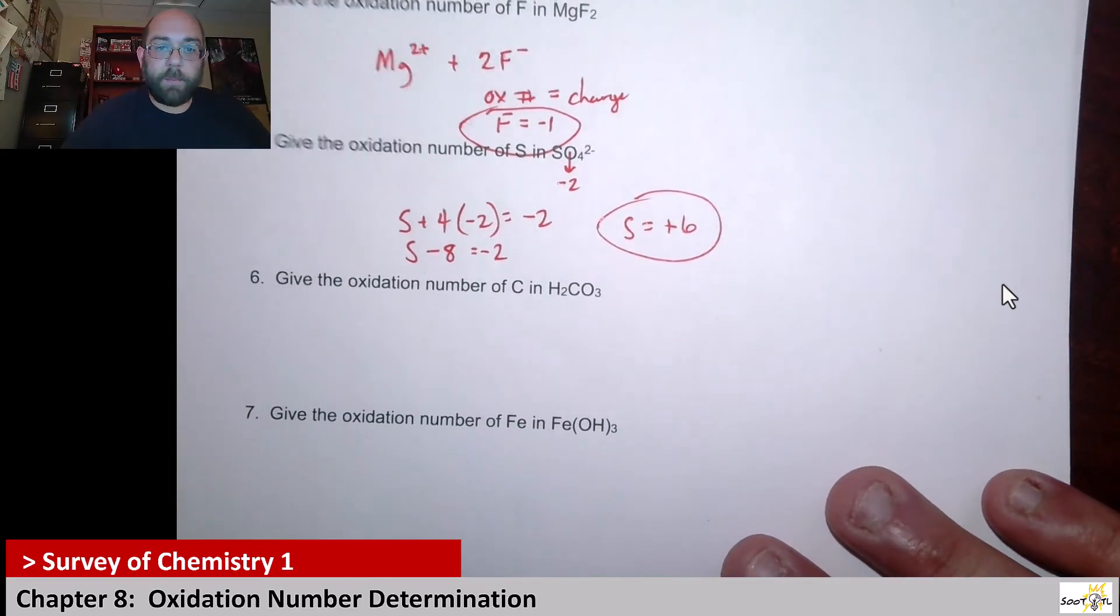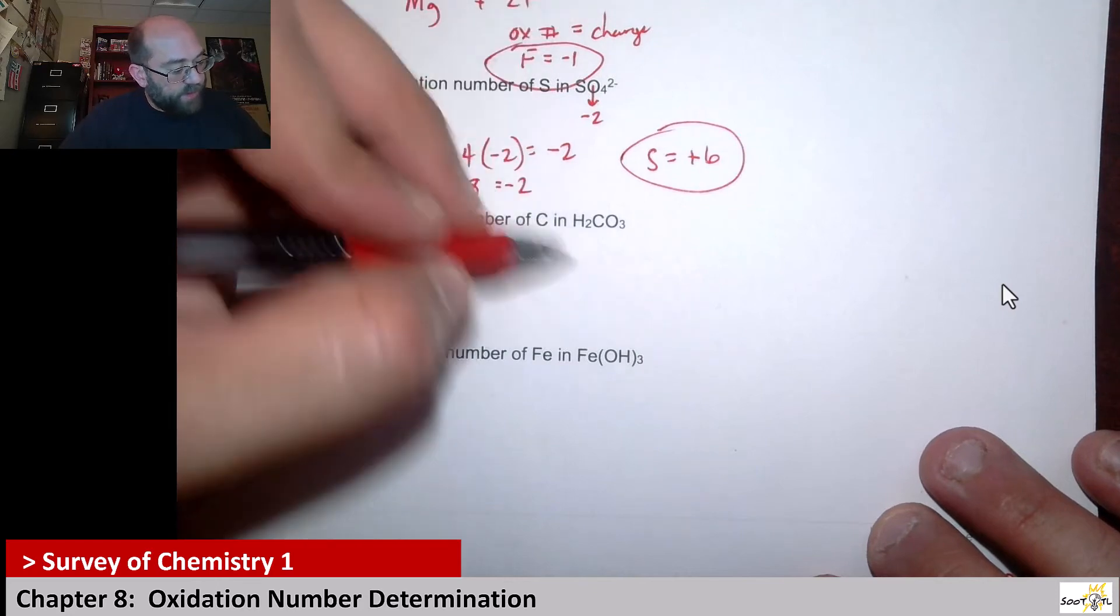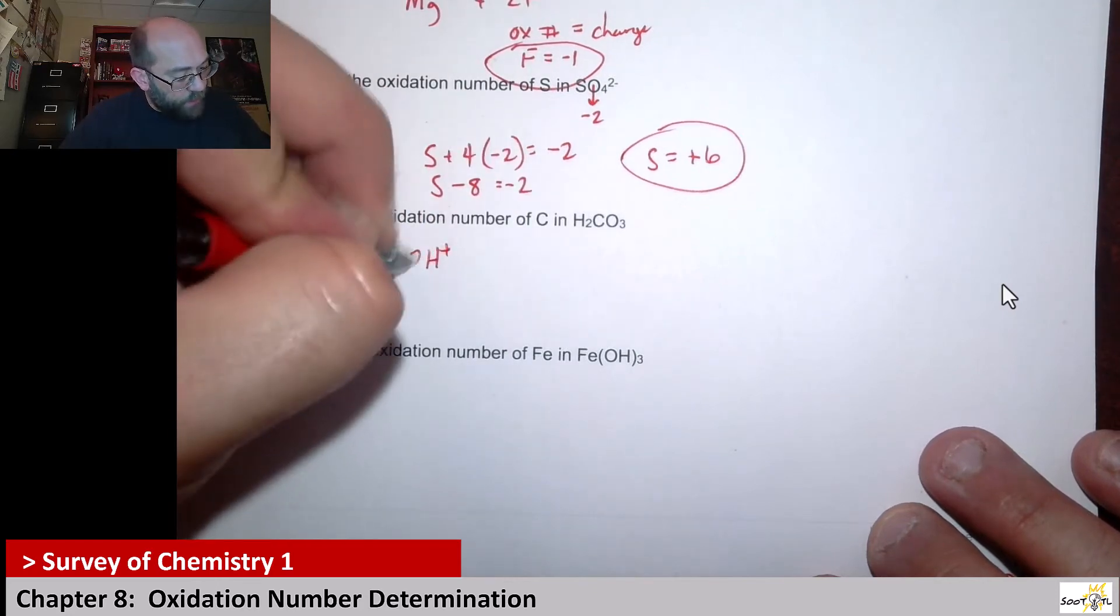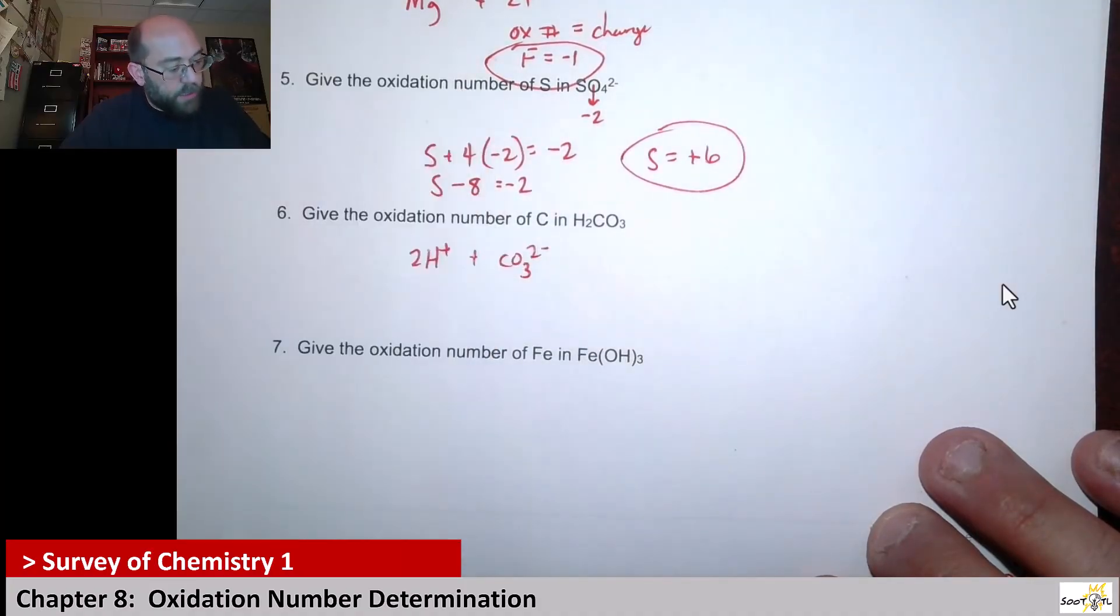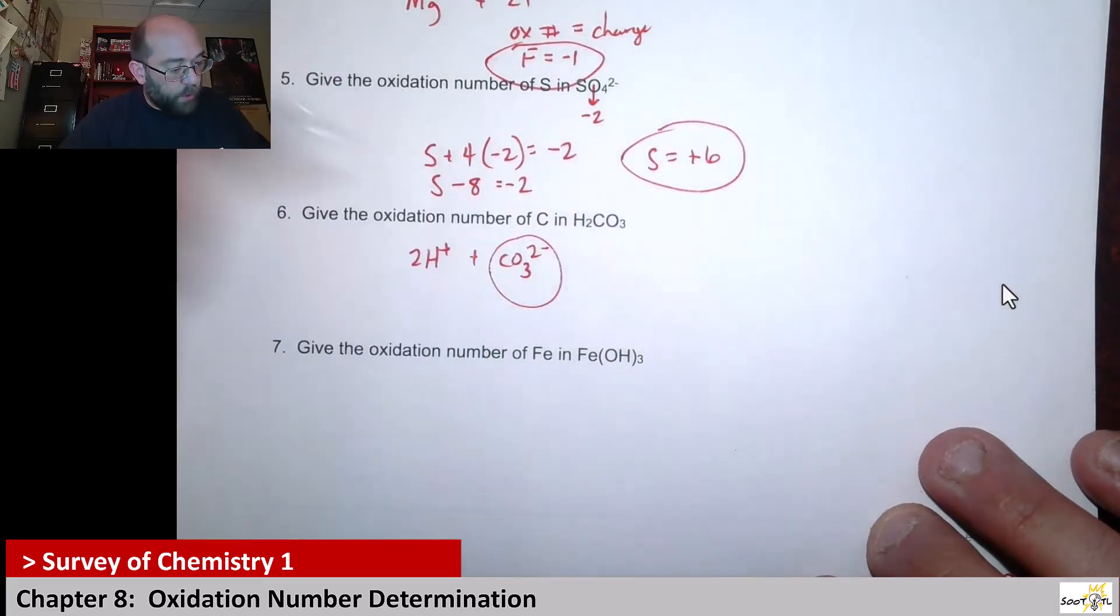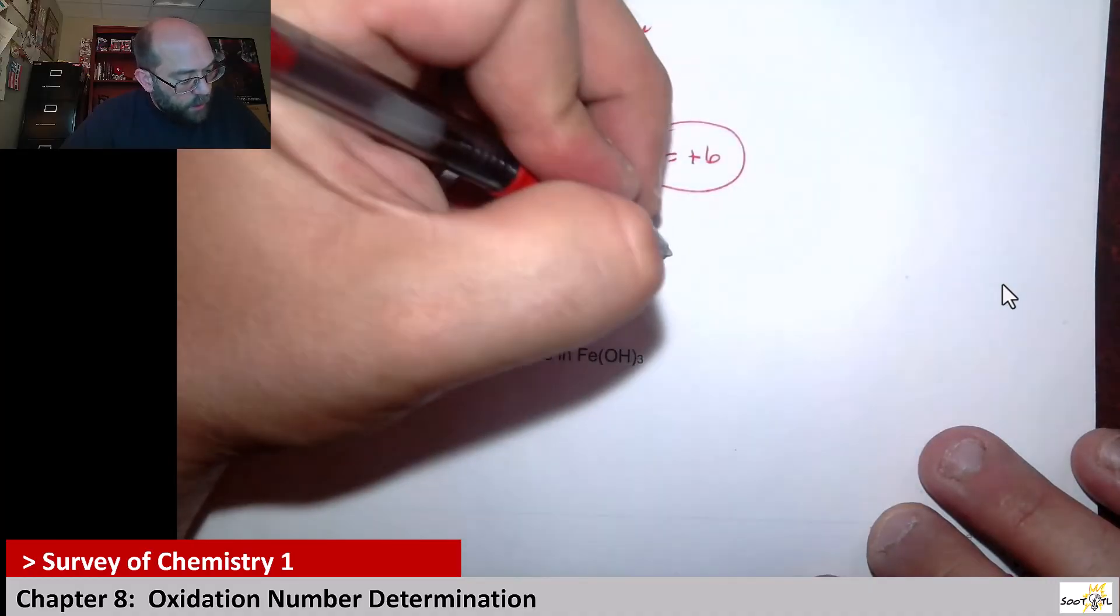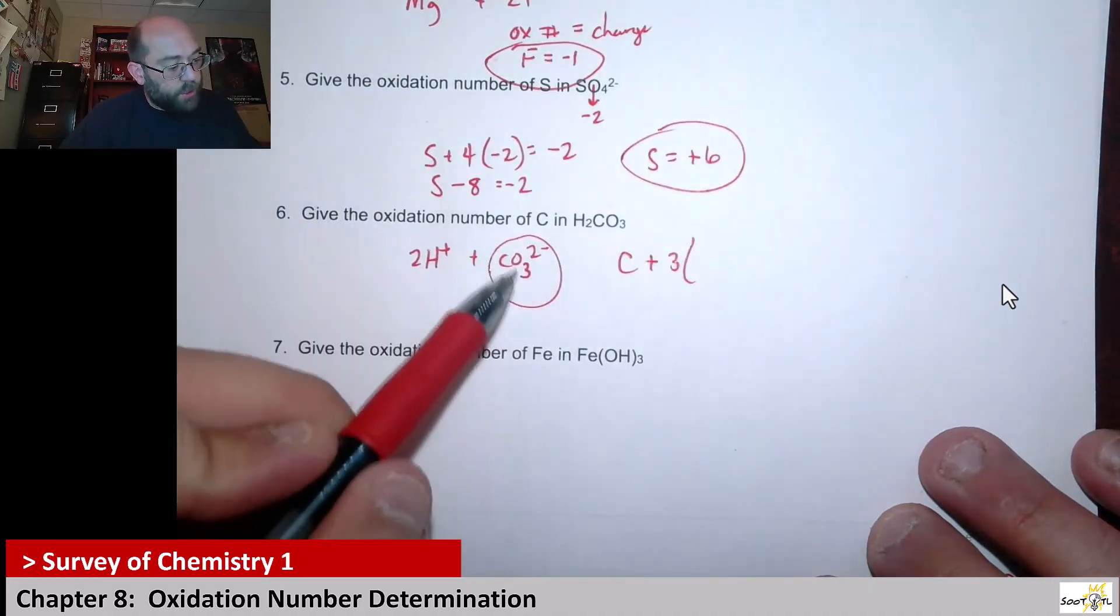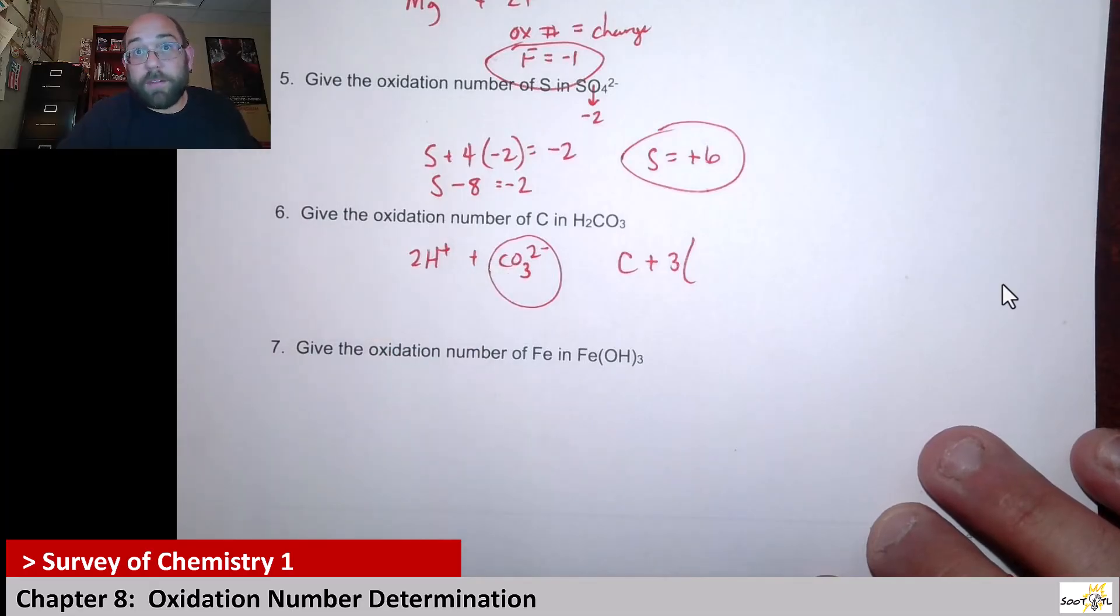Next up, we have the oxidation number for carbon in carbonic acid. So this is an acid. You can think of this as H+, you have two of those, plus the carbonate ion, polyatomic ion which is CO3 with a -2 charge. So I can just focus on this part. I know that carbon plus three times the oxidation on oxygen, which is -2—we haven't seen a peroxide.